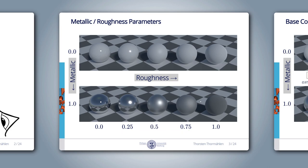In Disney's model, the metallic parameter could also be set to a fractional value, for example 0.5. This would mean that the material behaves 50% like metal and 50% like a dielectric material, which is physically not plausible. Therefore, we should not use values other than 0 and 1 for the metallic parameter. If we stay within the physical world, it is much easier to produce a realistic material that works well in different lighting conditions.